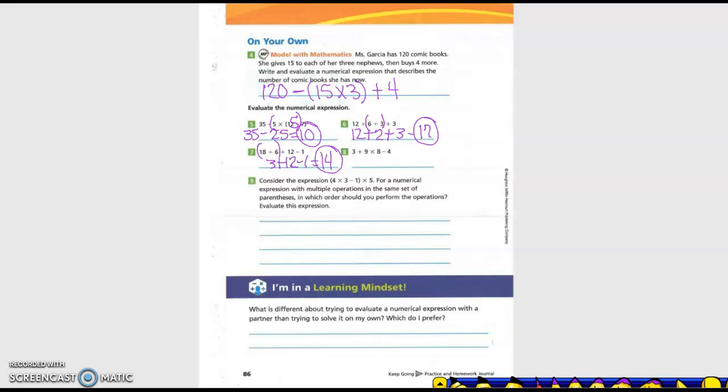Okay. Next one. 3 plus 9 times 8 minus 4. So I'm going to put parentheses. So what am I going to do first? 9 times 8. So 3 plus what? 72 equals 75 minus 4 equals. So I'm going to put parentheses.